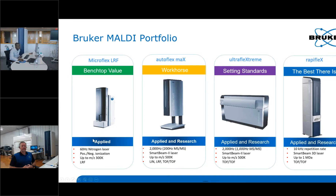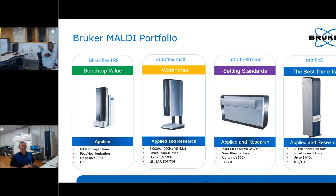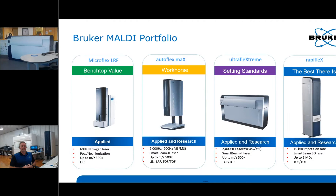Next up is the Ultraflex Stream, which has a horizontal setup. This is our gold standard for complex samples, including polymer analysis, co-polymers, complex mixtures, or samples embedded in a complex matrix requiring higher resolution. It comes equipped with a 2,000 Hz SmartBeam laser, the same as in the AutoFlex Max, but allows MS/MS experiments at 1,000 Hz repetition rates versus 200 Hz on the AutoFlex Max. It has a mass range up to 500,000 Dalton and also has TOF/TOF capabilities.